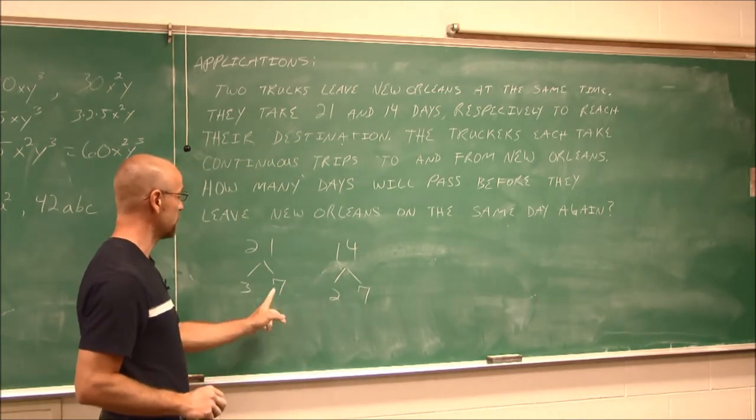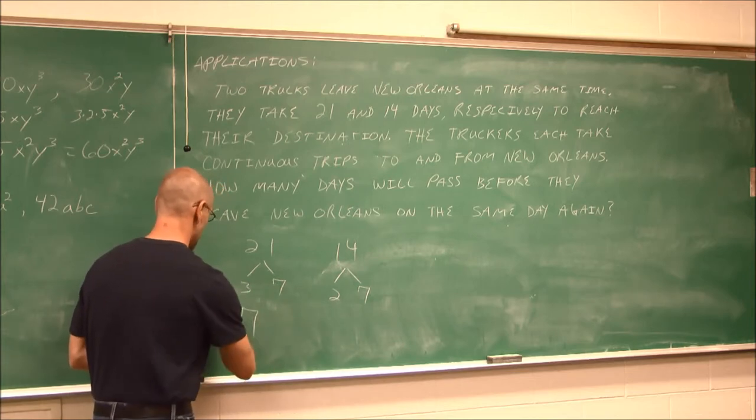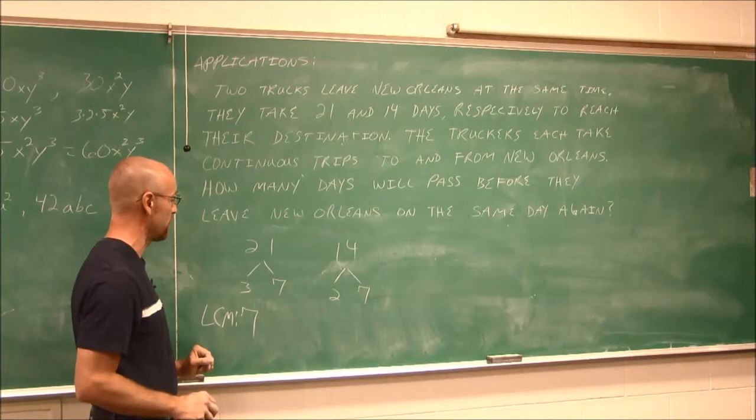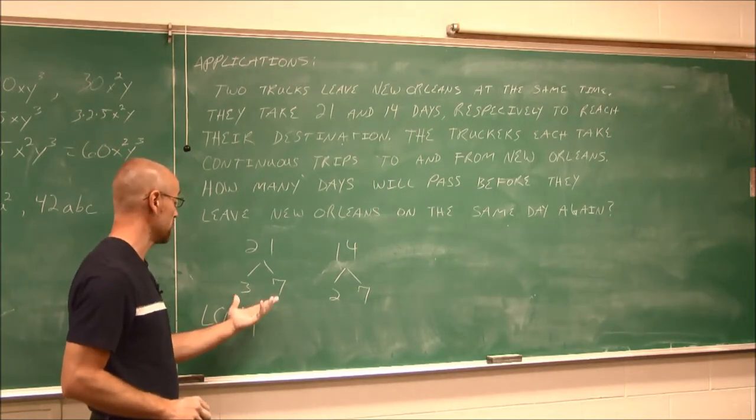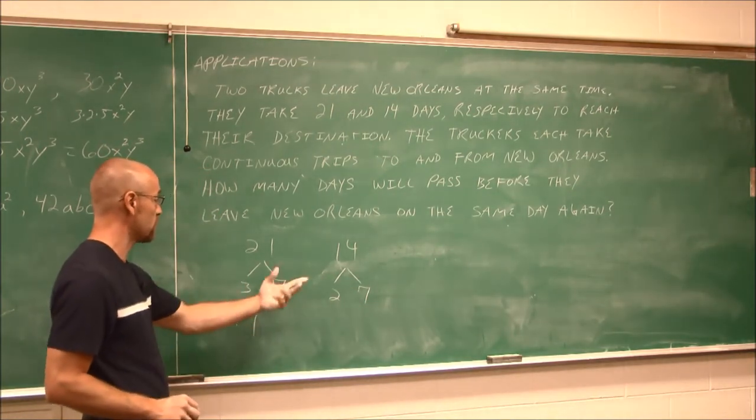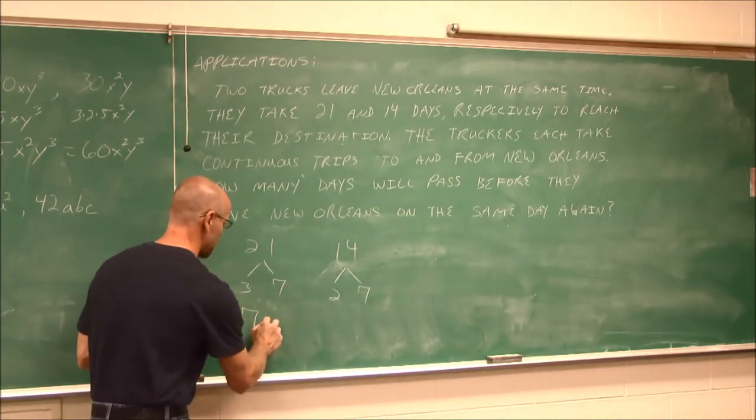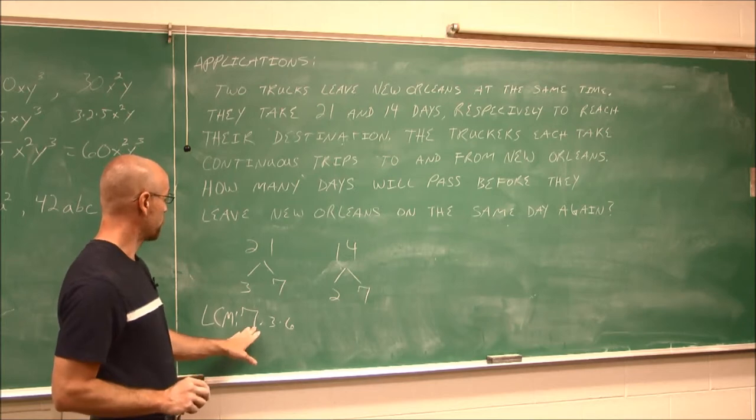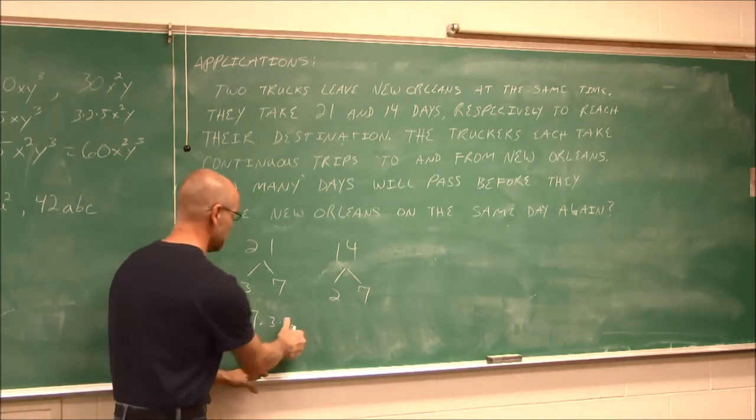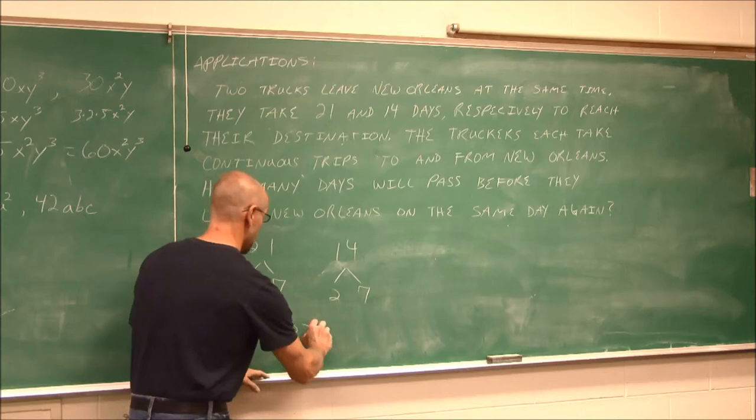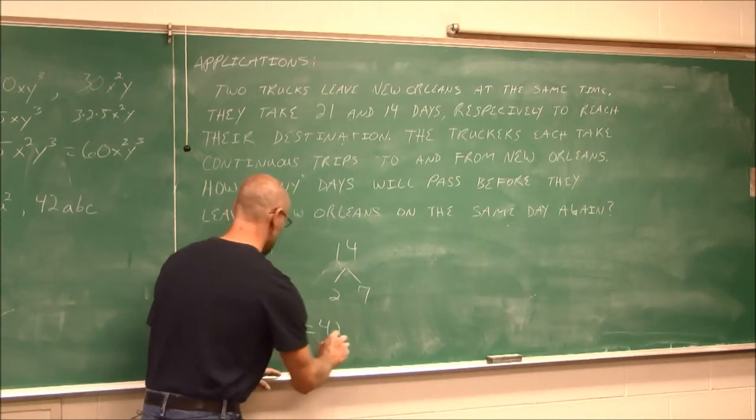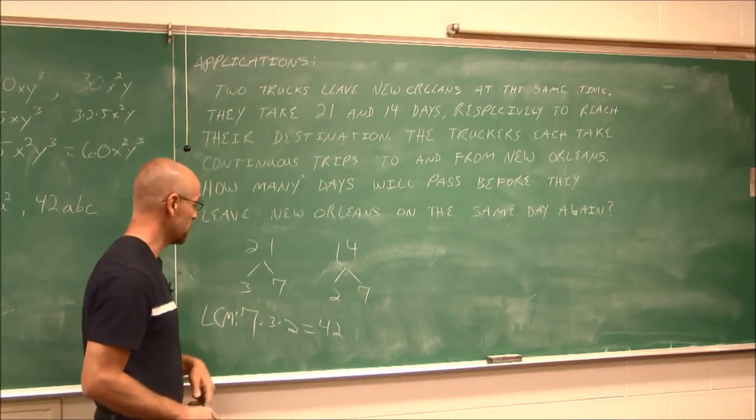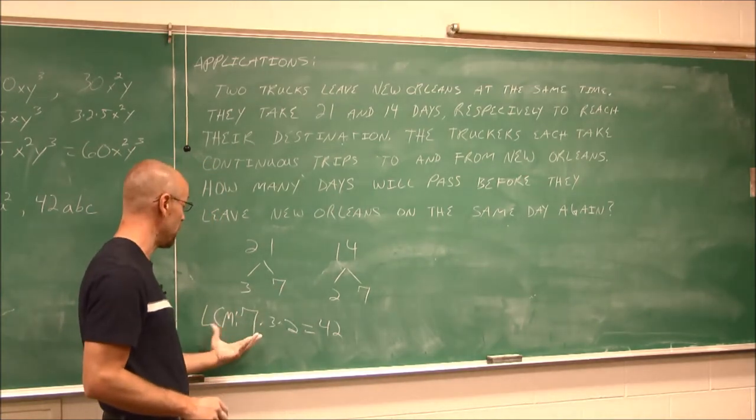So the unique factor here is 7. So part of my least common multiple is going to be 7. And then, or actually, this is not the unique factor. It's the repeated factor. And there's only one of them. And then, my unique factors are 3 and 2. So 7 times 3 times 2 is going to be 42. 7 times 3 is 21, 21 times 2 is 42. So we can see that their least common multiple is 42.